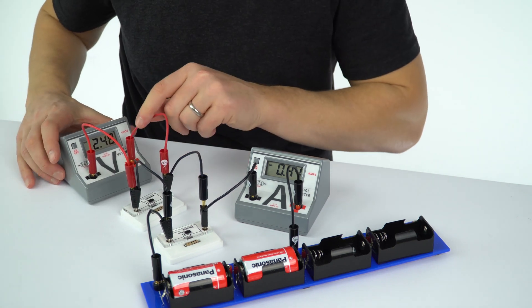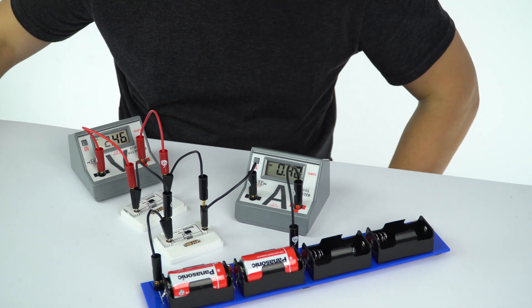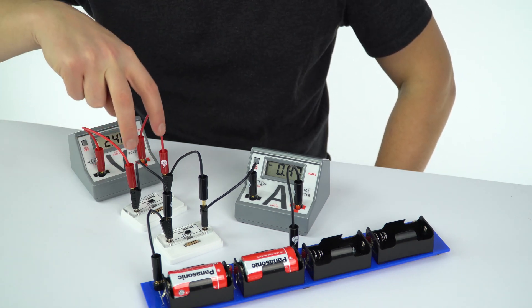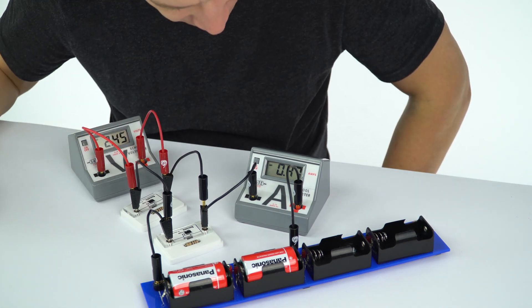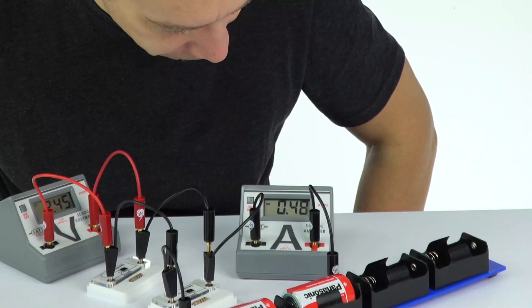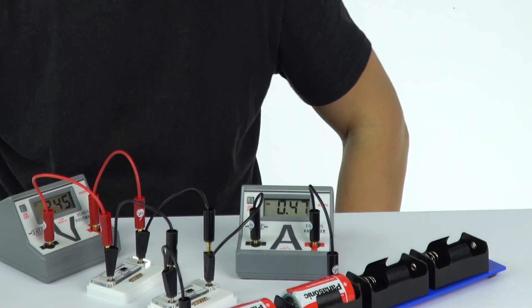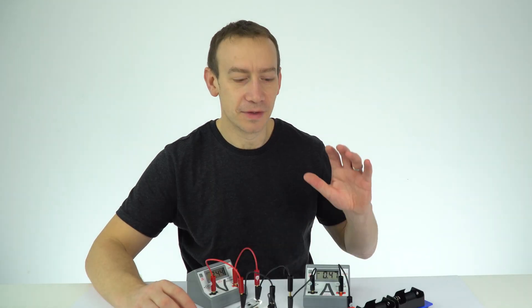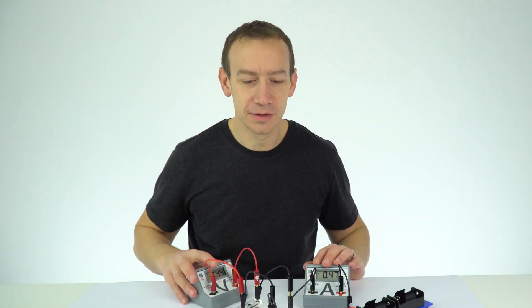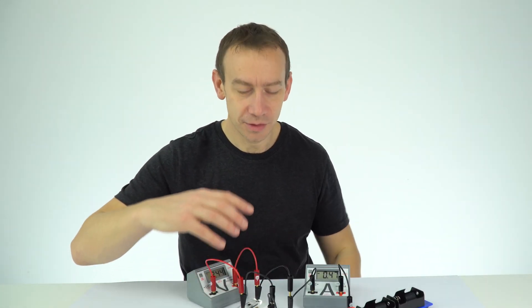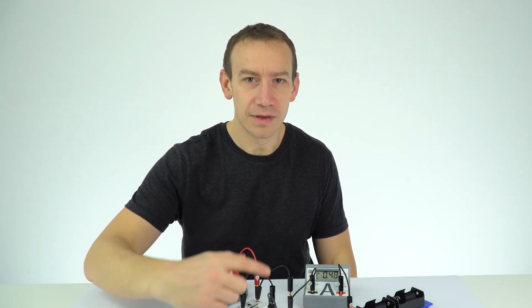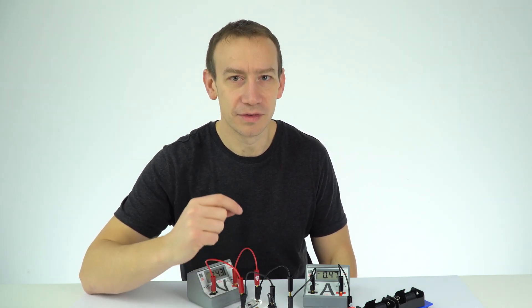So now we've got 2.46 volts and that's going to be across both of these, and we've got a current of 0.47 or 48 amps. So we've now got readings for the current and the voltage, and we can now look at the total combined resistance of this combination of resistors in parallel.